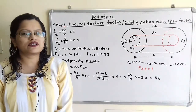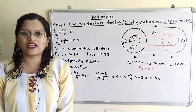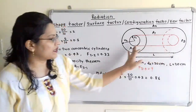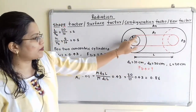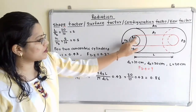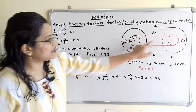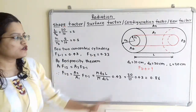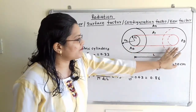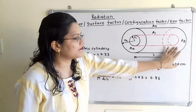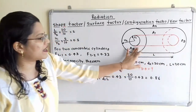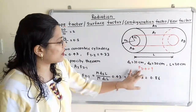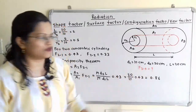The question asks us to find the shape factor between the open ends. There are circular holes at each end, so we need to find the shape factor between surface area A3 and surface area A4 — that is, F(3→4).